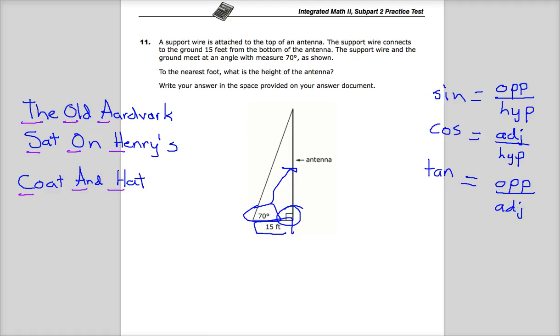Now based on this question, the hypotenuse is not in use at all. So this is not a sine question, it's not a cosine, it's a tangent question. So I'm going to say tangent, and since I'm looking for a side length and not an angle, it's not inverse tangent. So tangent of 70 degrees is equal to the opposite side which would be the antenna over adjacent which is 15 feet.